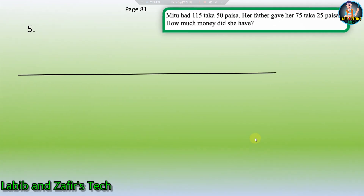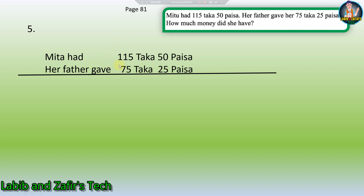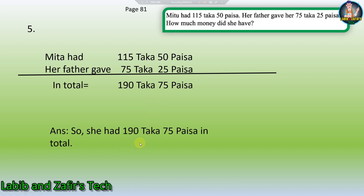Now let's go to our fifth word problem. Mitu had 115 Taka 50 Persha. Her father gave her 75 Taka 25 Persha. How much money did she have? Mitu had 115 Taka 50 Persha, and her father gave 75 Taka 25 Persha. Adding these, in total 190 Taka 75 Persha. She had 190 Taka 75 Persha in total. This is our fifth word problem.